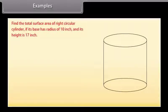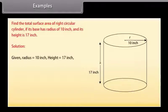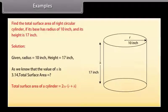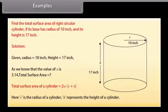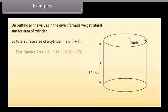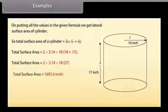Example: Find the total surface area of a right circular cylinder if its base has radius 10 inches and height 17 inches. Solution: r = 10 inches, h = 17 inches, π = 3.14. Total surface area = 2πr(r + h) = 2 × 3.14 × 10 × (10 + 17) = 1695.6 inch square.